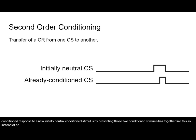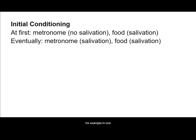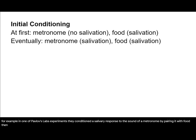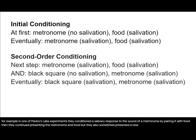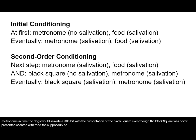So instead of a conditioned stimulus and an unconditioned stimulus, you have an initially neutral stimulus and a stimulus that already elicits a response of some kind. For example, in one of Pavlov's lab's experiments, they conditioned a salivary response to the sound of a metronome by pairing it with food. Then they continued presenting the metronome and food, but they also sometimes presented a new stimulus — a black square — along with the metronome. In time, the dogs would salivate a little bit with the presentation of the black square, even though the black square was never presented with food, the supposedly unconditioned stimulus.